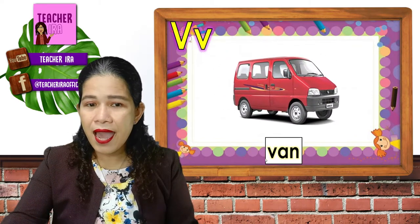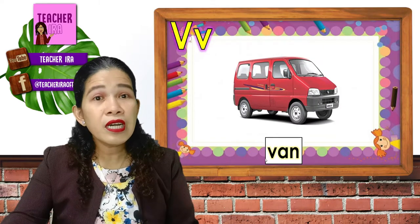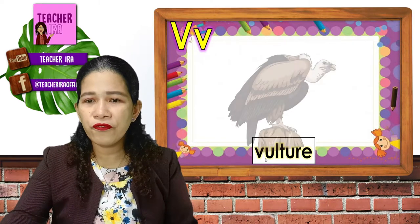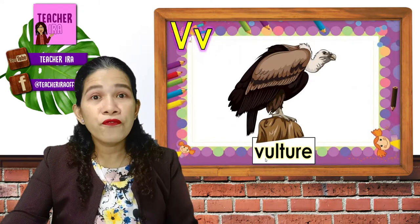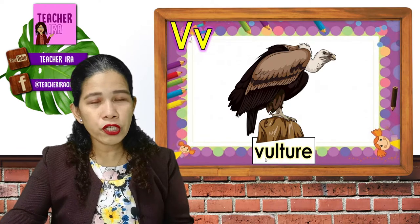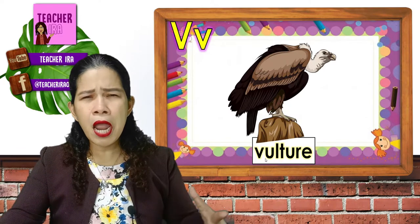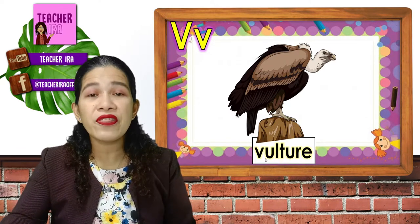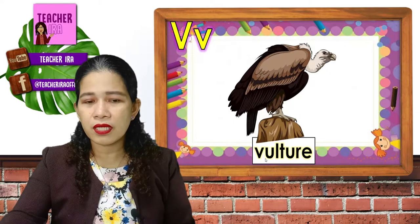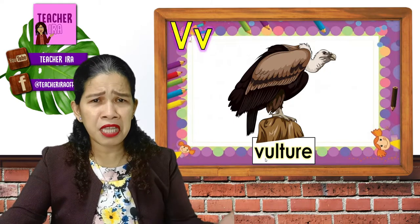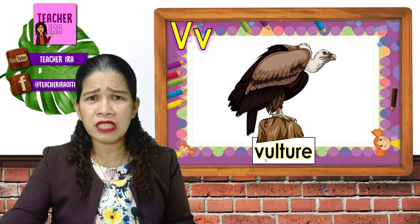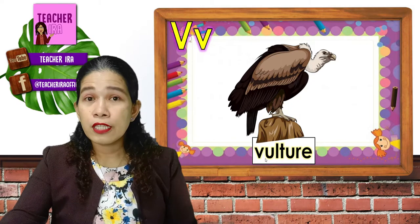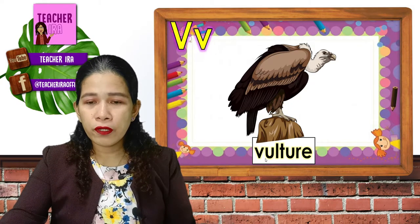V, van. V, van. Next, V, vulture. V, vulture. It's a very big bird that feeds on dead things — dead people, dead animals, any dead things. That's V, vulture.